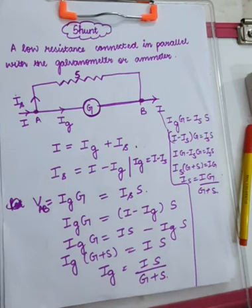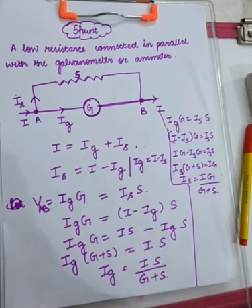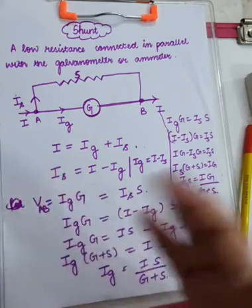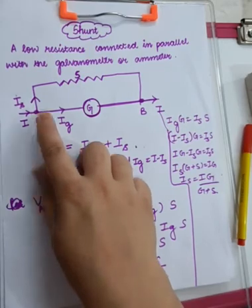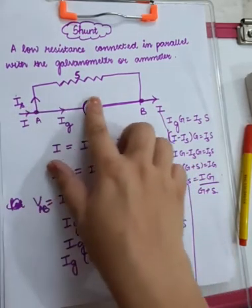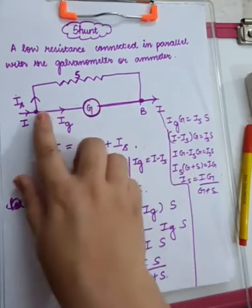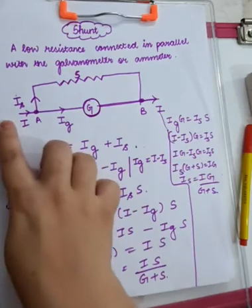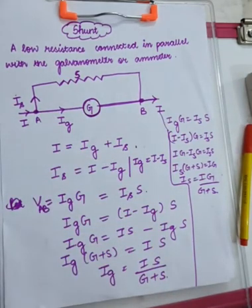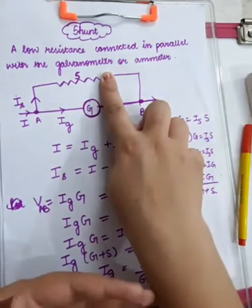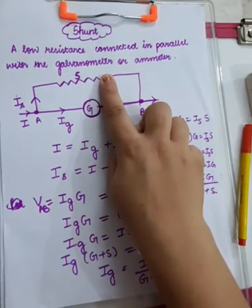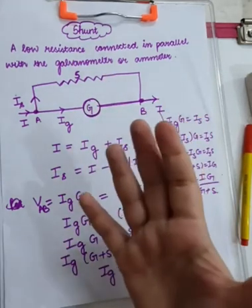The current will always flow through the path having the least resistance. Suppose this current is entering the circuit — a part of it will flow through the galvanometer and most of it will flow through the shunt. Since this is a parallel combination, the current entering the circuit will divide itself so that most of it flows through the shunt, because it is a low resistance path.